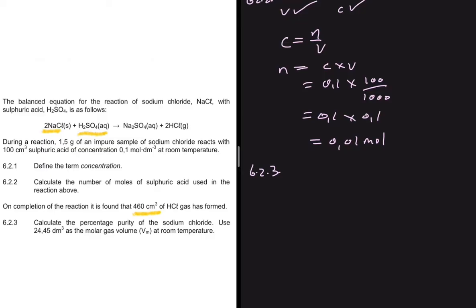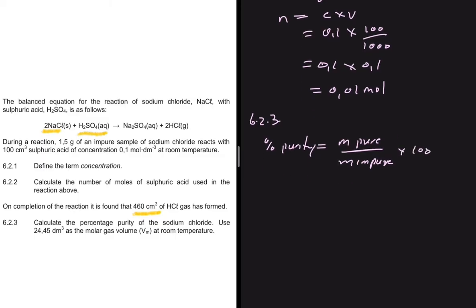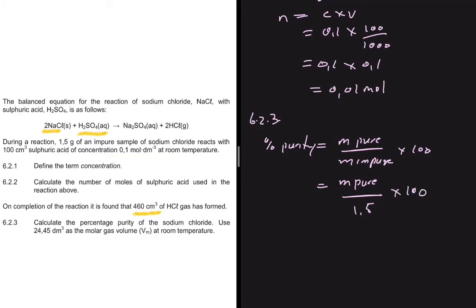We're looking for the percentage purity of the sodium chloride. We know that percentage purity equals the mass of the pure sample divided by the mass of the impure sample, multiplied by 100. The mass of the impure sample is 1.5 grams, so we just need to find the mass of the pure sodium chloride.